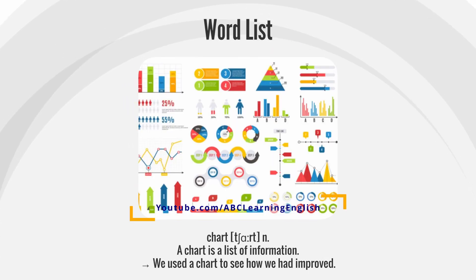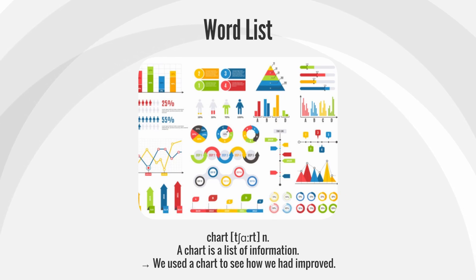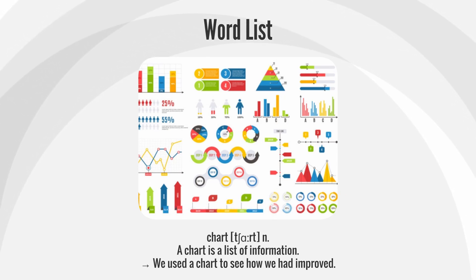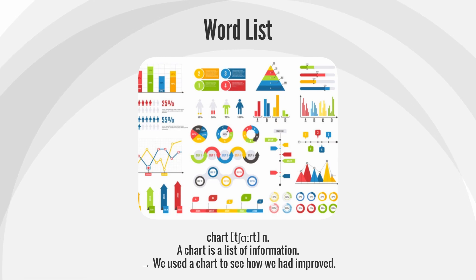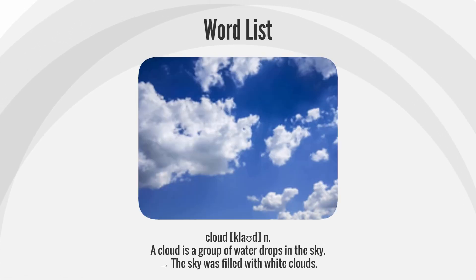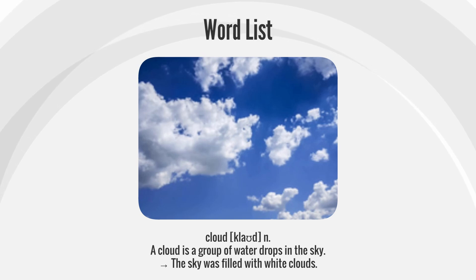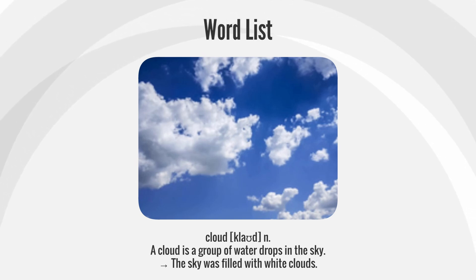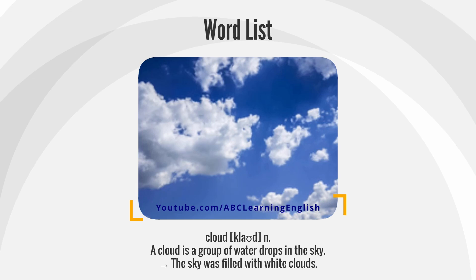Chart: A chart is a list of information. We used a chart to see how we had improved. Cloud: A cloud is a group of water drops in the sky. The sky was filled with white clouds.